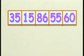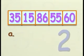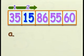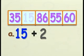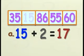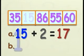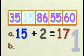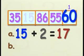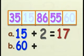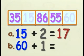Look at the diagram. A: What is the answer when we add 2 to the second number from your left? The second number from your left is 15. When we add 2 to 15, we get 17. B: What do we get when we add 1 to the first number from your right? The first number from your right is 60. When we add 1 to 60, we get 61.